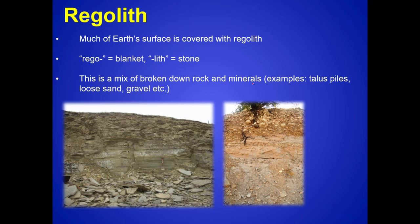You know how important soils are for the planet — all your plants depend on the soils for their root systems, and of course the animals and all biological activity depend on those plants. Another term here is regolith. Regolith is basically just soil without the organic matter — it's just the mix of broken down rocks and minerals.